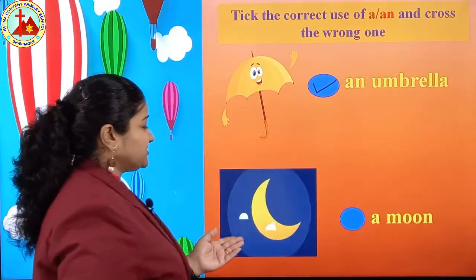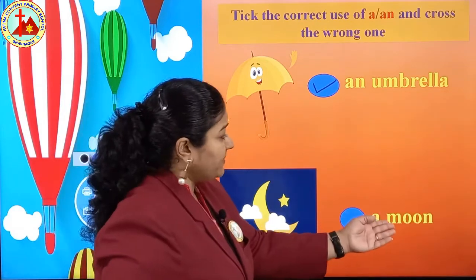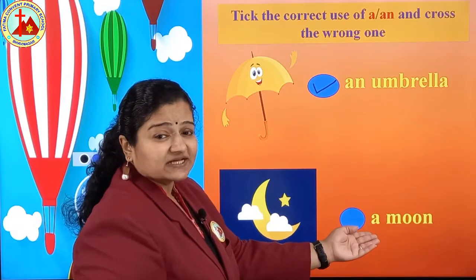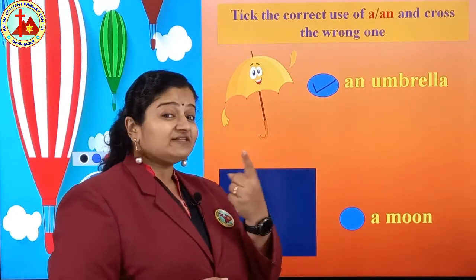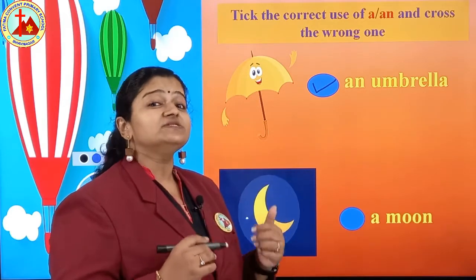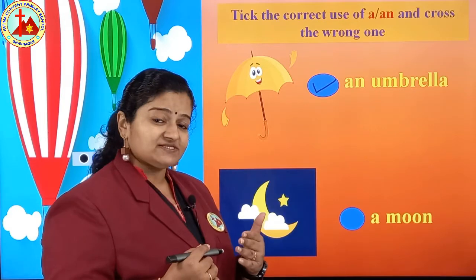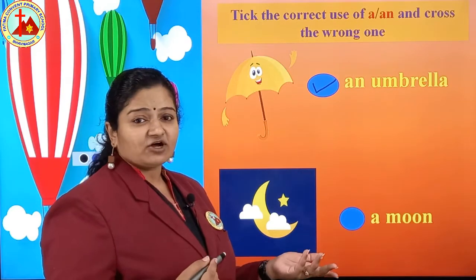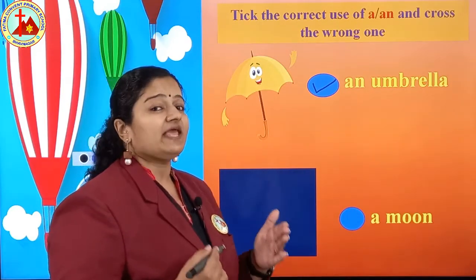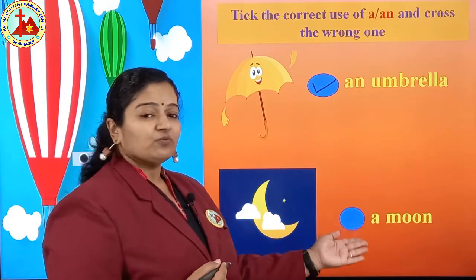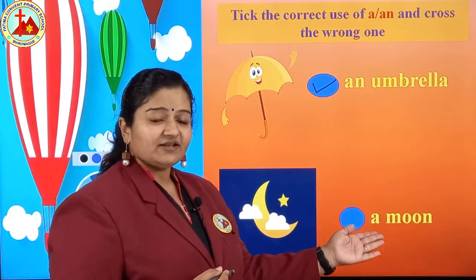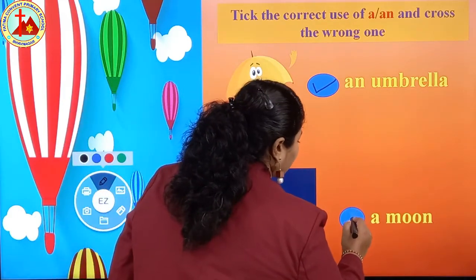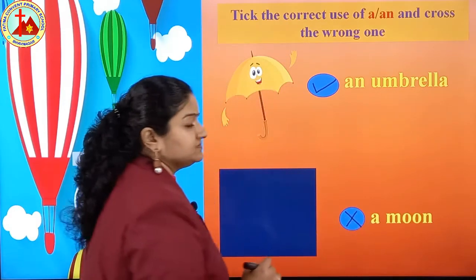Next one is picture of moon. M, O, O, N — moon. Before moon, A is written. In this lesson we are only using A or AN — and since there is only one moon, 'the moon' would normally be used, but for our exercise this sentence is wrong. Put a cross.